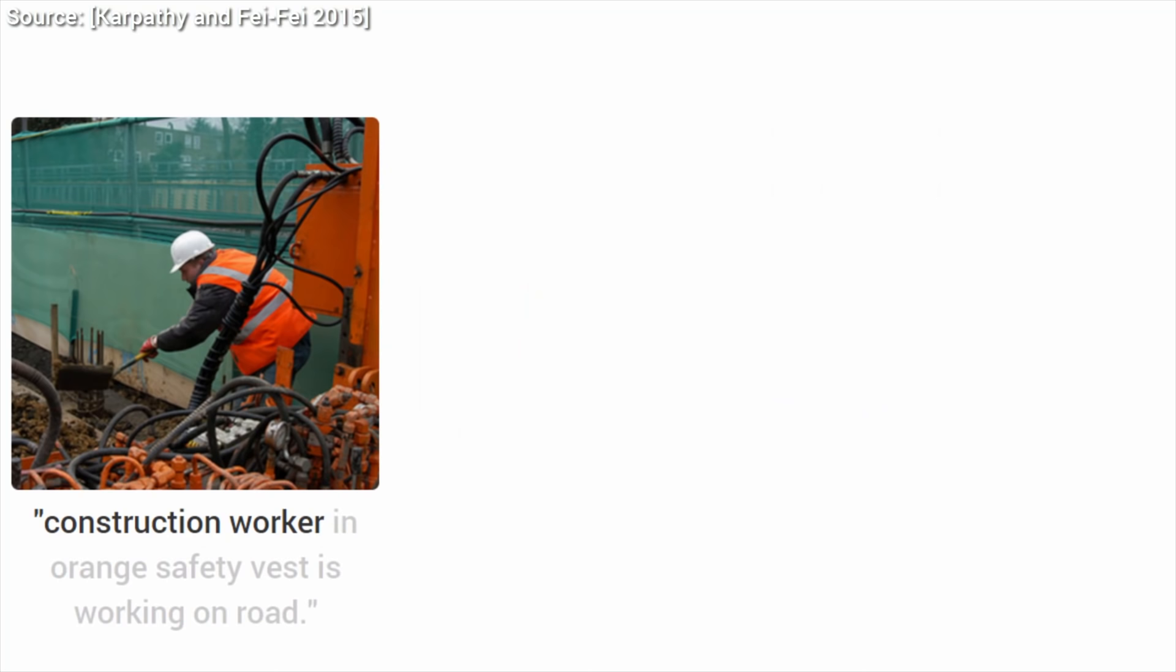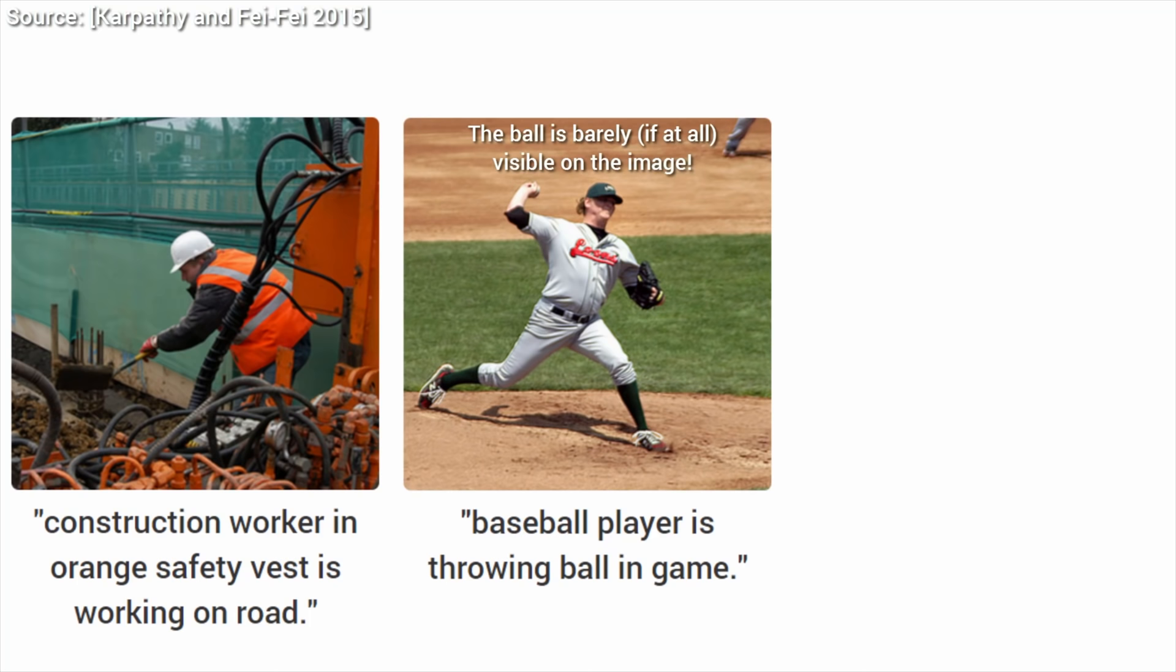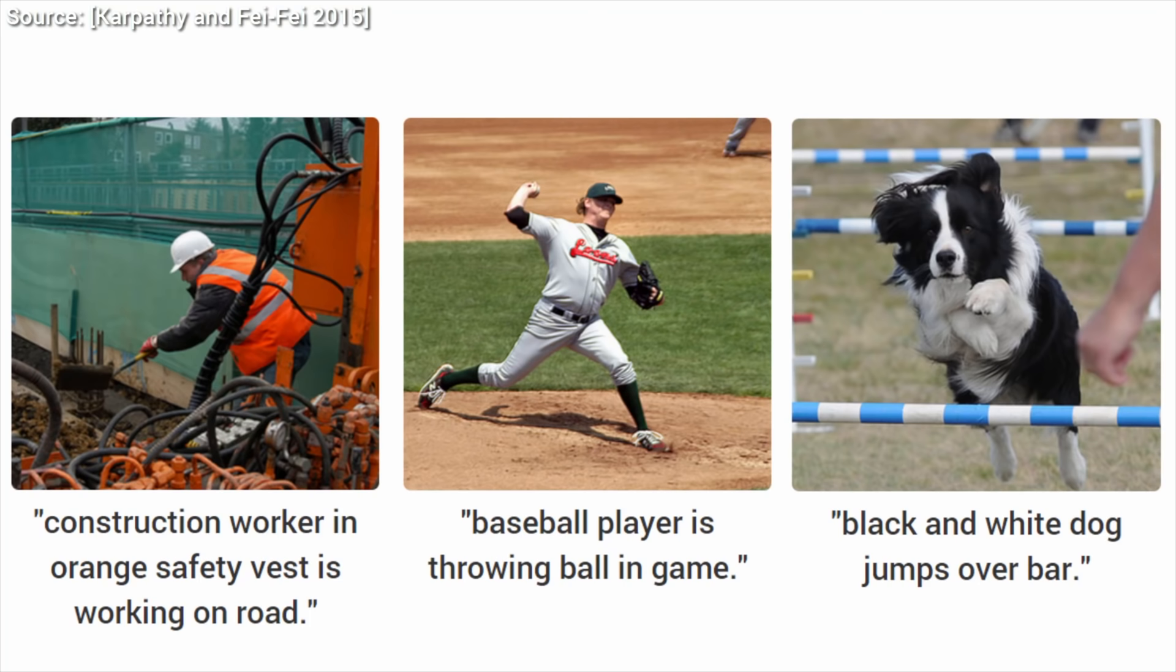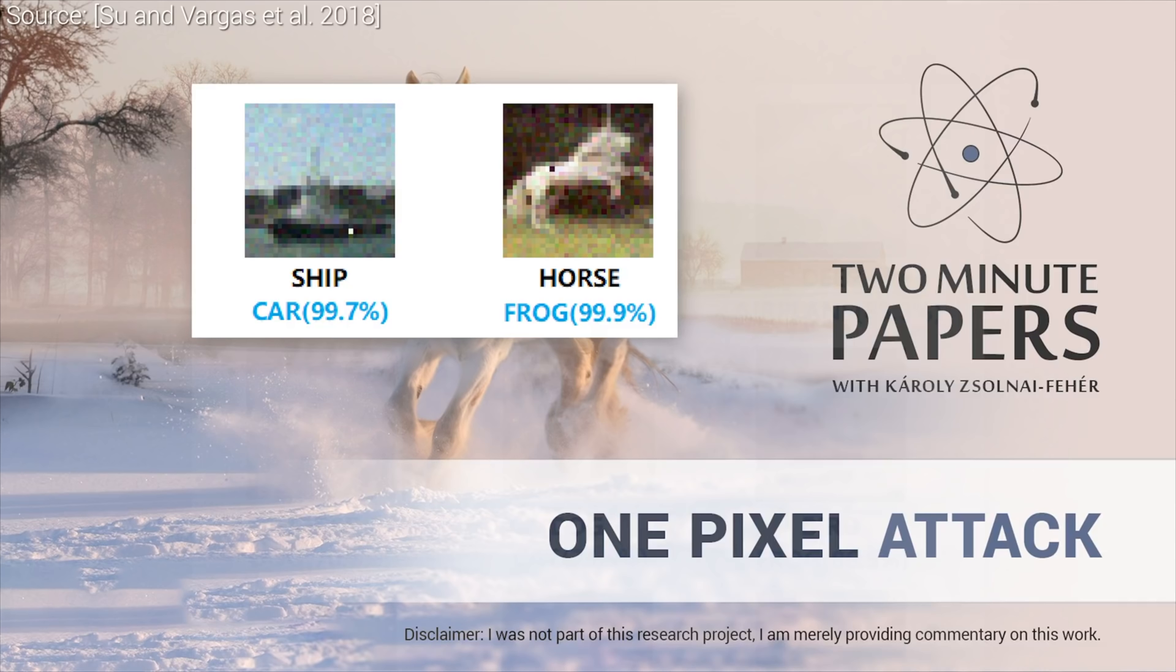Today, it is almost taken for granted that neural network-based learning algorithms are capable of identifying objects in images or even write full, coherent sentences about them, but fewer people know that there is also parallel research on trying to break these systems. For instance, some of these image detectors can be fooled by adding a little noise to the image, and in some specialized cases, we can even perform something that is called the one pixel attack.